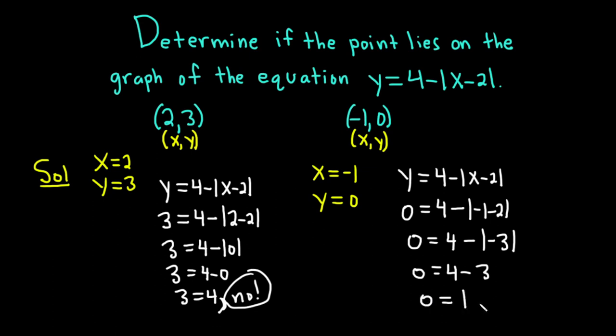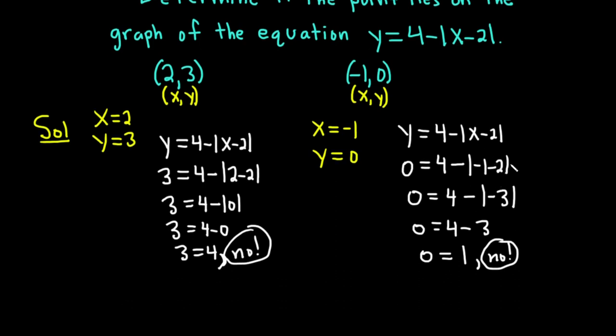And so in this case the answer again is no. It doesn't work because this is not true. So if we had plugged in a number and it had been true, for example, let's say we plugged in, let's do one more, let's say we do 2 comma 4. Let's try this one.